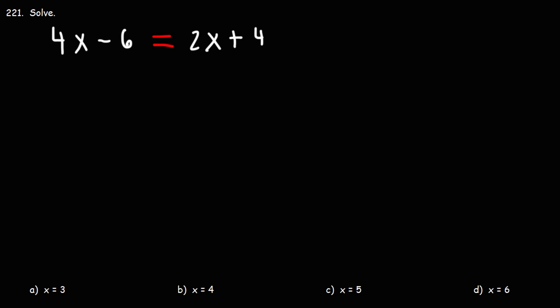Number 221. 4x minus 6 is equal to 2x plus 4. Let's solve the equation by finding the value of x. So let's begin. We need to get x by itself.